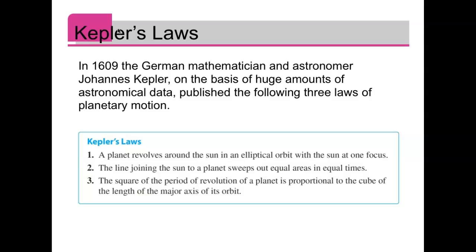And three, the square of the period of revolution of a planet is proportional to the cube of the length of the major axis of its orbit.